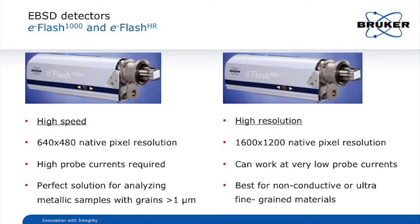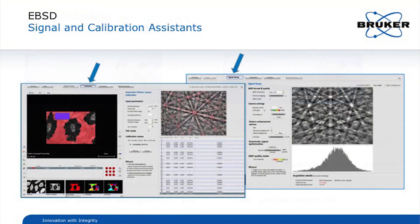Bruker offers two detectors for EBSD, one that is ideal for high speed measurements and one for applications requiring high resolution patterns. Both detectors are in situ vertically adjustable and the software has assistants that help you find the signal and perform the calibration.